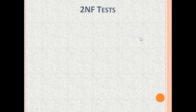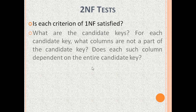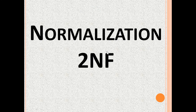We have seen database normalization explained with examples and how to test if a table is in 2NF or not. We need to check: is each criterion of 1NF satisfied? Next, what are the candidate keys? What columns are not a part of the candidate key? Does each such column depend on the entire candidate key? Thank you and see you in my next video on 3NF.